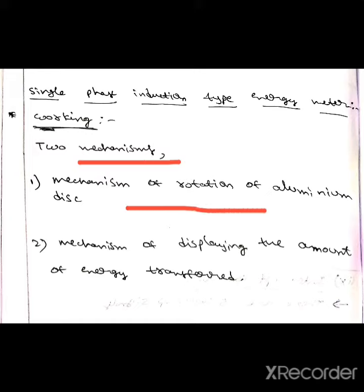Let's discuss the mechanism of rotation of aluminum disc. In this mechanism, a metal coil acts upon two coils.